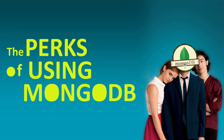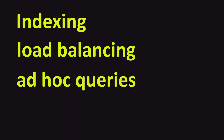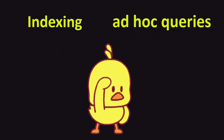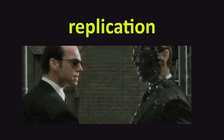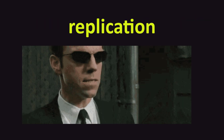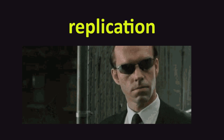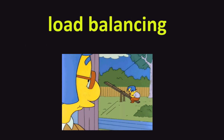Now, MongoDB comes with a variety of benefits, among them is indexing, load balancing, ad hoc queries, and replication. Indexes and ad hoc queries can help make finding data a whole lot easier, replication to help copy the data to multiple servers so that if one fails, you'd have another as a backup, and load balancing to help equally distribute the workload across these multiple servers.